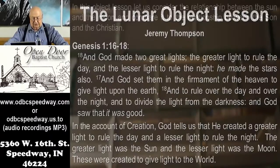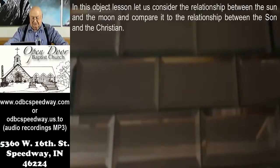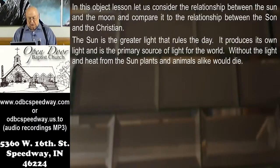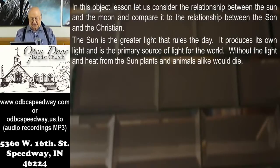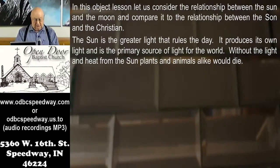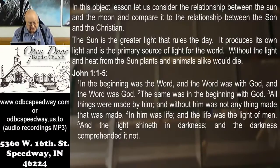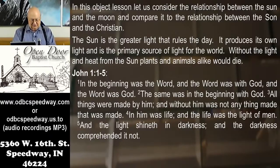Let us consider the relationship between the sun and the moon and compare it to the relationship between the Son — S-O-N — and the Christian. The S-U-N sun is the greater light that rules the day; it produces its own light and is the primary source of light for the world. Without the light and heat from the sun, plants and animals alike would die. John 1:1-5 — 'In the beginning was the Word. The Word was with God. The Word was God. The same was in the beginning with God. All things were made by him, and without him was not anything made that was made. In him was life.' Here we see an echo of what was just said about the sun.